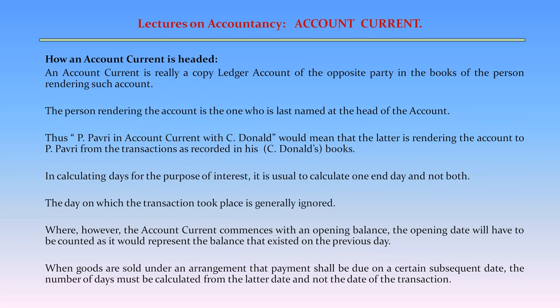How an Account Current is Headed. An account current is really a copy ledger of the opposite party in the books of the person rendering such an account. The person rendering the account is the one who is last named at the head of the account. Thus, 'P. Pauri in account current with C. Donald' would mean that the latter is rendering the account to P. Pauri from the transactions as recorded in C. Donald's books.